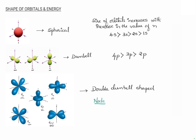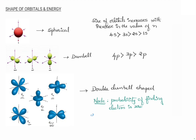A node is a region where the probability of finding an electron is zero. For s orbitals, any point inside the sphere has an equal probability of finding electrons. For p orbitals, the probability of finding electrons is zero at the point where the two lobes meet. The same applies to d orbitals. There are two different types of nodes.